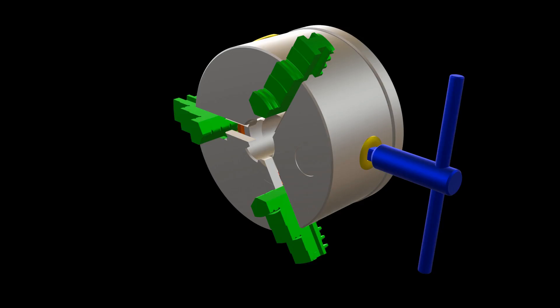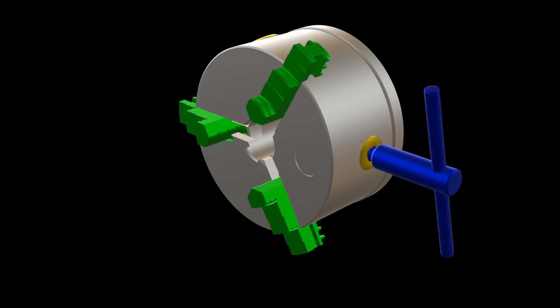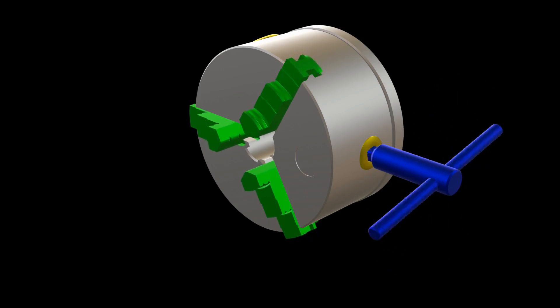Behind the chuck of a lathe machine, there are some neat mechanisms that make the jaw clamp to the workpiece as you rotate the tool inside any of the grooves.